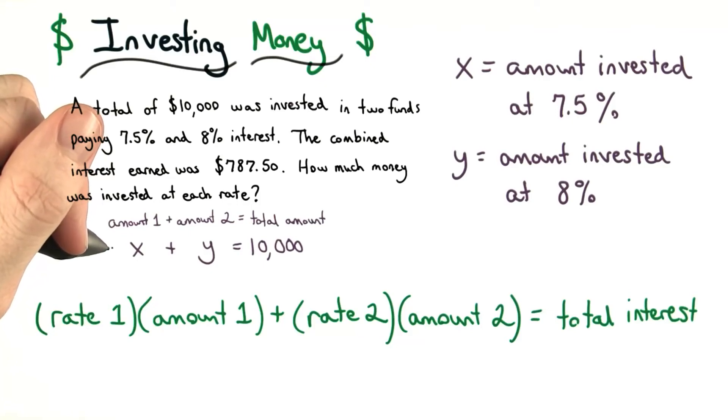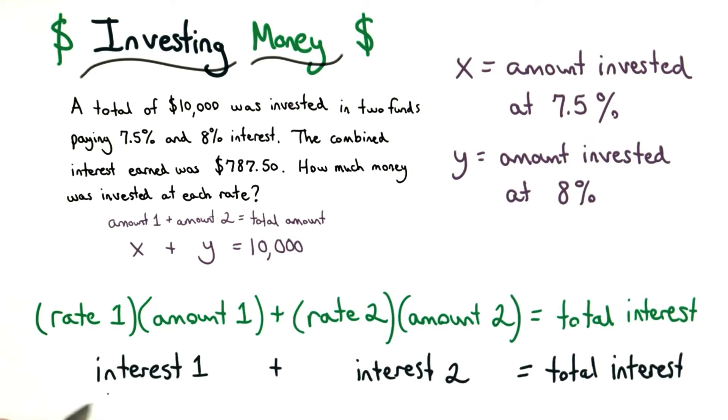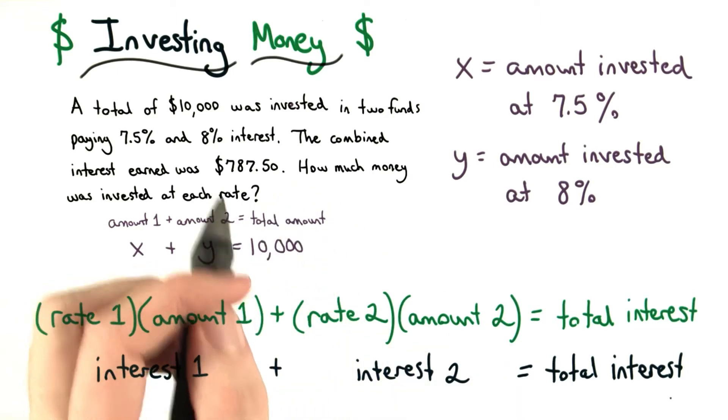Now that we have one equation, we need to set up another one. The other equation needs to involve interest. I know if I add the interest from one account and the interest from the other account, I'll get my total interest of $787.50.